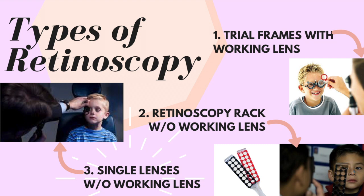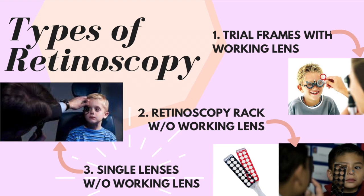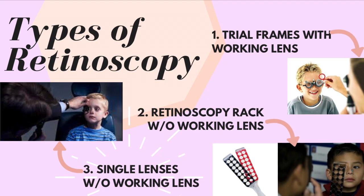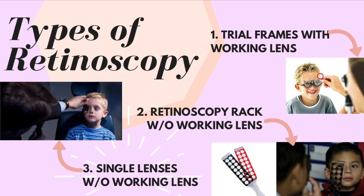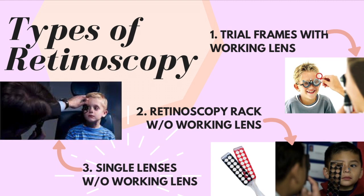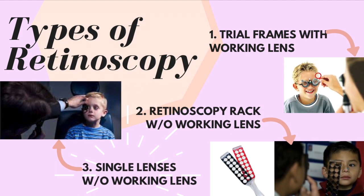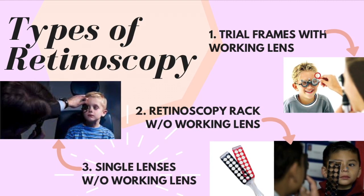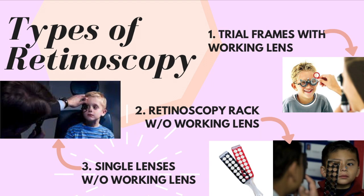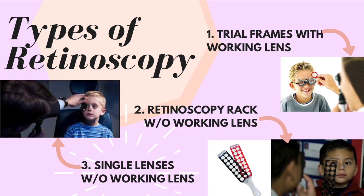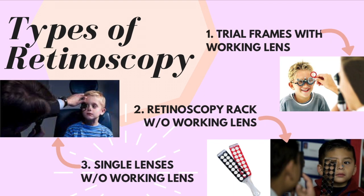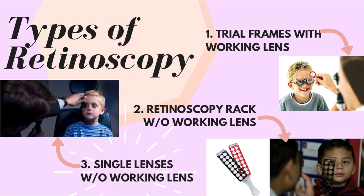There are three different methods of retinoscopy. The first method is using a trial frame with a working lens inserted. The second method is using a retinoscopy rack without a working lens, and the third method is using loose lenses without a working lens. This video will focus on using single lenses, as it prevents discomfort from the trial frame and allows the examiner to quickly change lenses during an assessment.